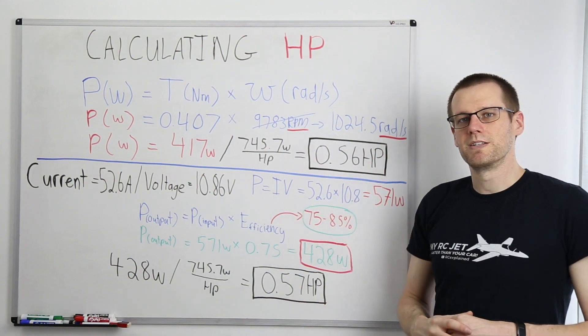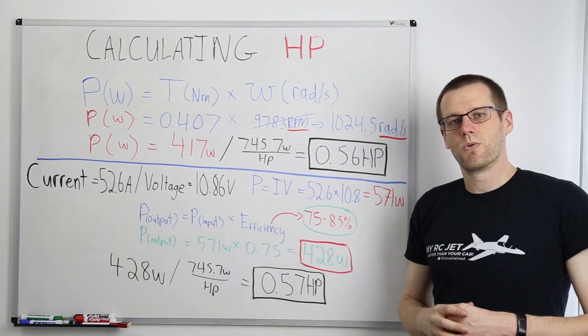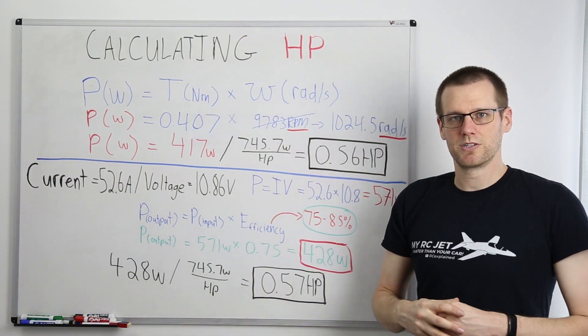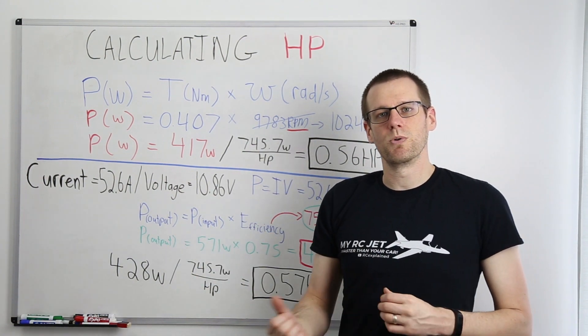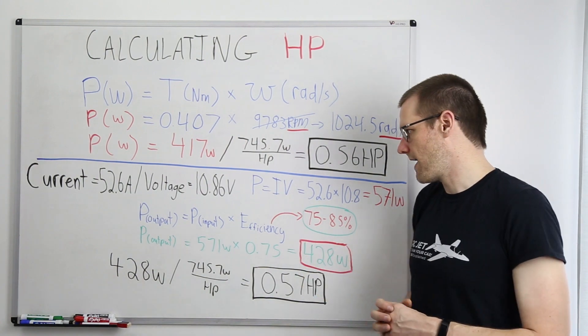52.6 multiplied by 10.8 gets us 571 Watts. Now, this is the wattage of power that we place into our system. It's not how many watts of power we get out of the system. We want how many watts we get out. We want that propeller shaft power.